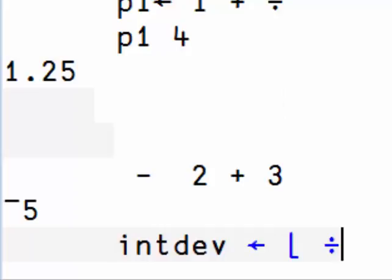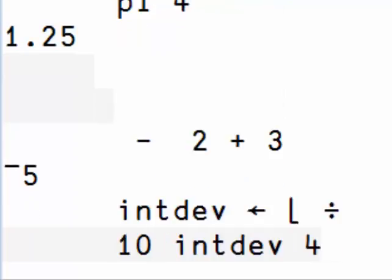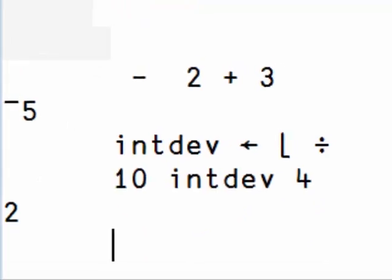Here is another example, the floor of the division. We can use it to find the integer part of a floating-point number. So for example here, 10 divided by 4 is 2.5, and the integer part is 2.